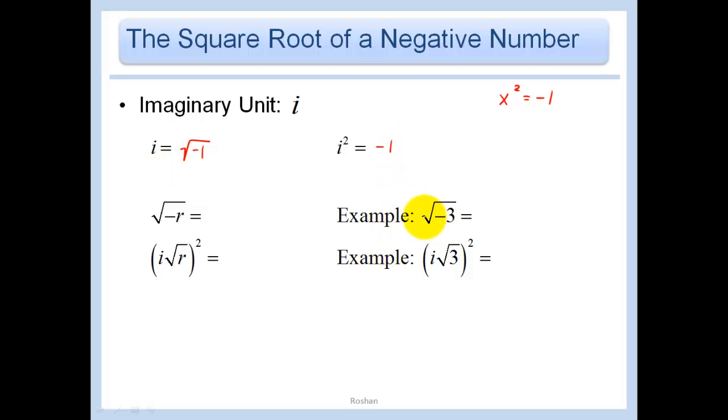So if we had an example like root negative 3, we could rewrite this as root negative 1 times 3 and take that root negative 1 out, which is just i. So this is i root 3. More generally, root negative 1 would just be i root 1.